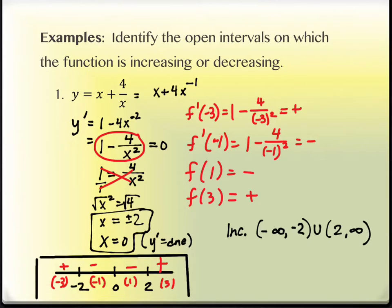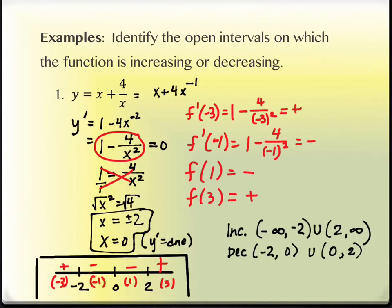It's very tempting to say the function is decreasing from −2 to 2, but it is not — there's an asymptote at x = 0, so there's a break in the graph. The graph is increasing on (−∞, −2) and (2, ∞), and decreasing on (−2, 0) and (0, 2). You can verify this is what your graph is doing using your calculator — it would be silly not to use that technology to catch any errors.